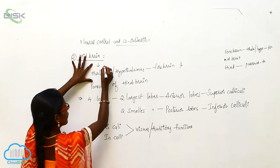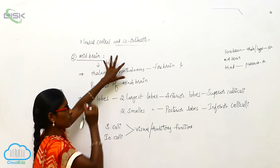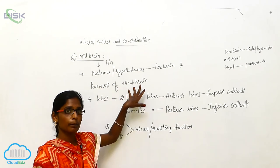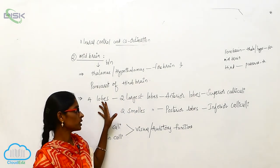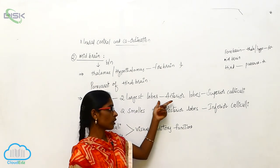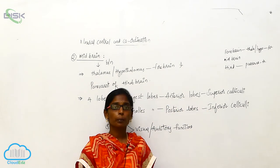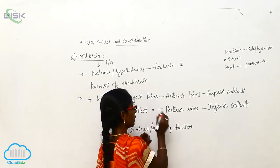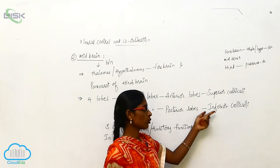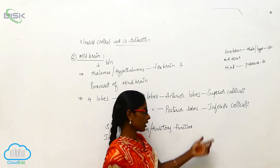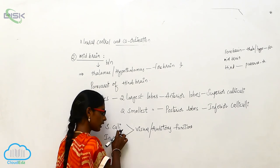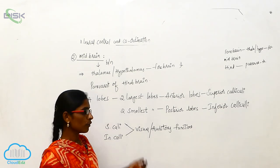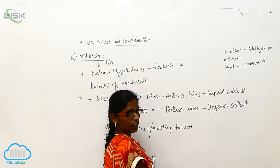So the midbrain is present between the thalamus and hypothalamus of the forebrain and pons Varoli of the hindbrain. It has four lobes — the two largest are anterior lobes known as superior colliculi, and the two smallest are posterior lobes known as inferior colliculi. The superior colliculi and inferior colliculi control visual and auditory functions.